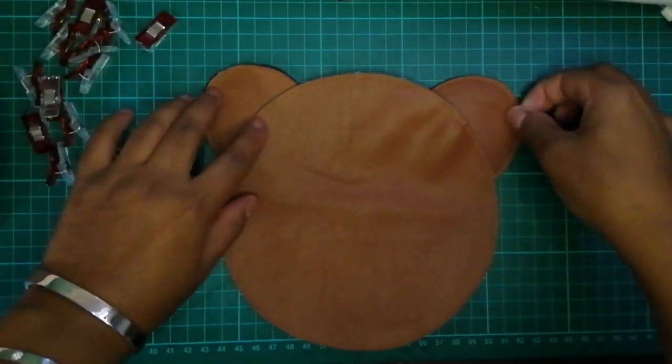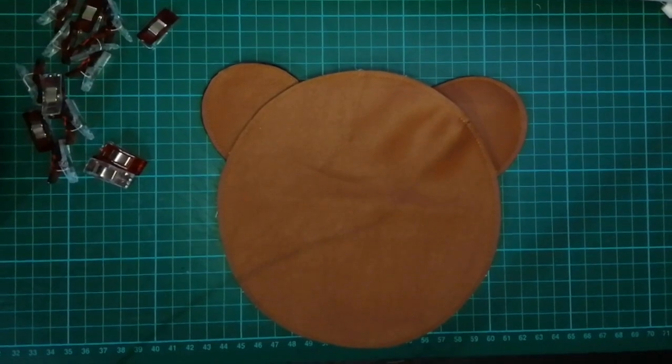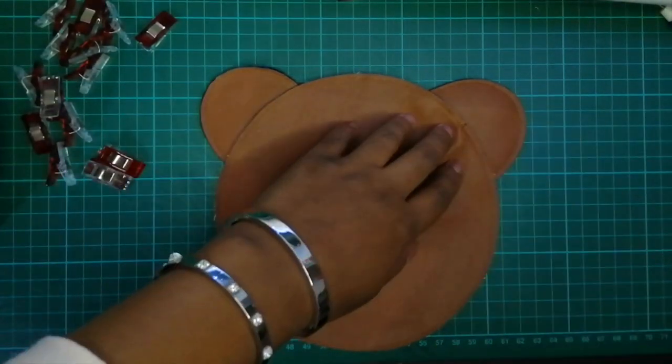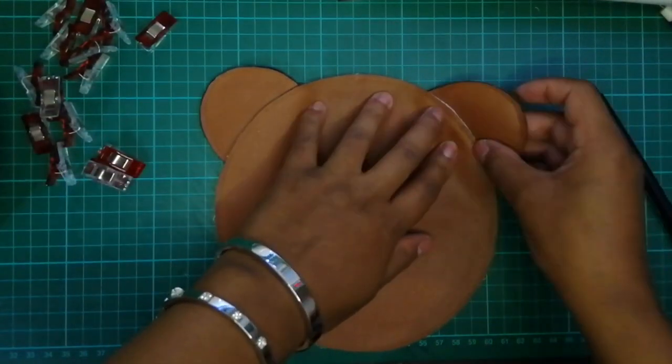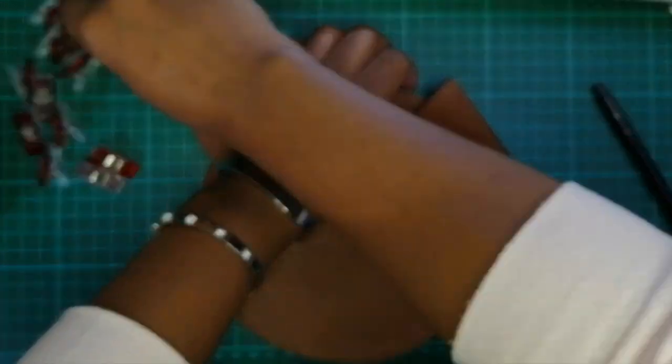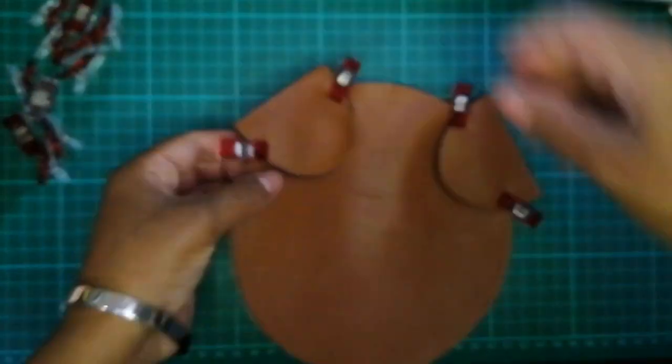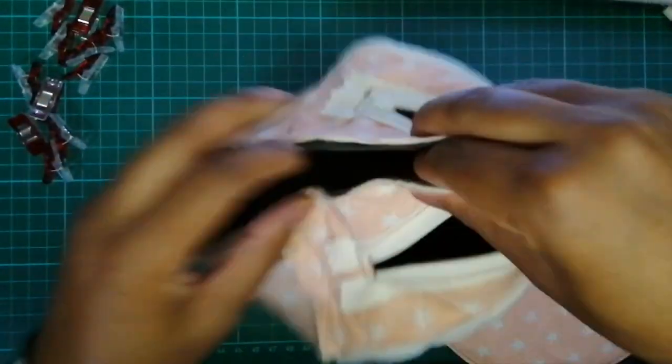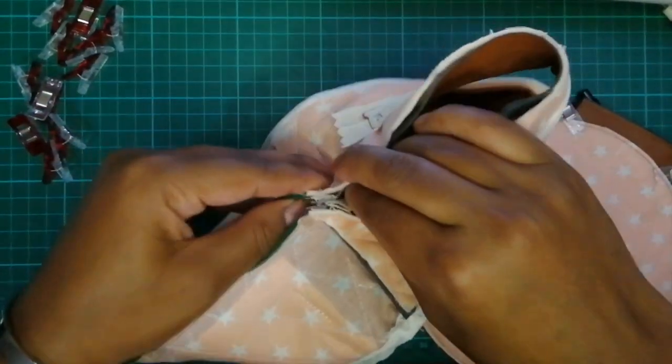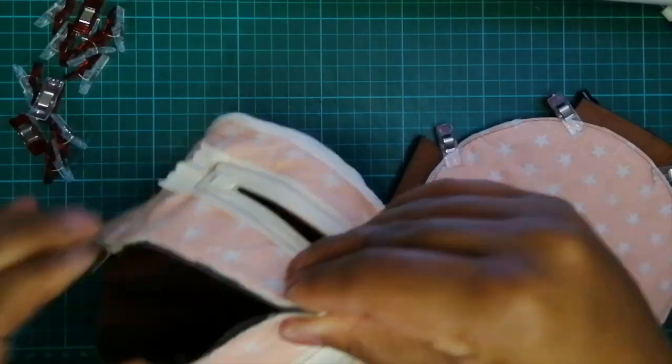For the front of the bag, position the ears where you want them to be on the circle and then carefully flip them over so they are pointing downwards and clip in place. Mark the centre point of the bag and the centre point of the bear face, place right sides together and sew with the bias tape.